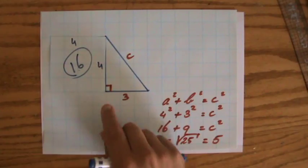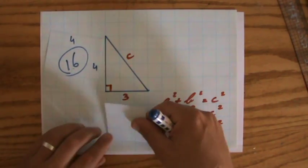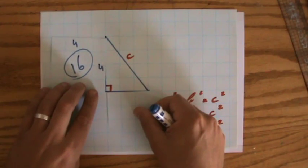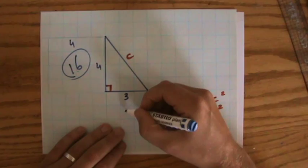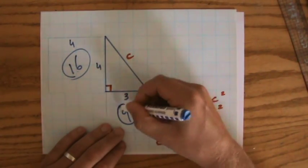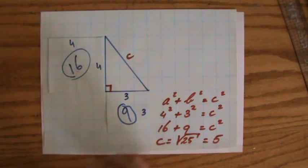And I'm going to do the same for my b squared, which is 3 squared, I'm going to attach a little square to that one as well, and that is a square of 3 by 3, so the area of this square is 9 units squared. 1, 2, 3, 4, 5, 6, 7, 8, 9.